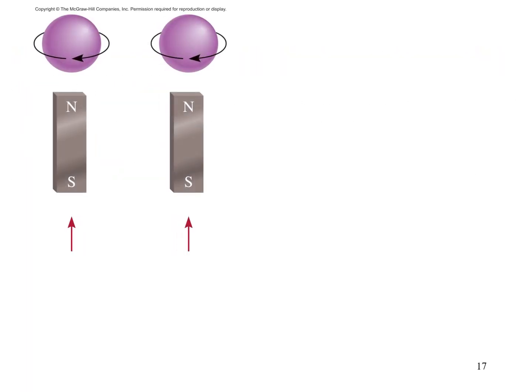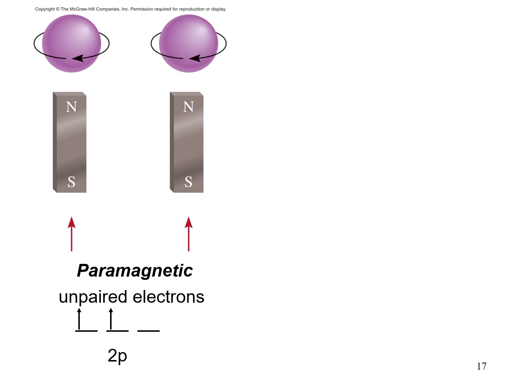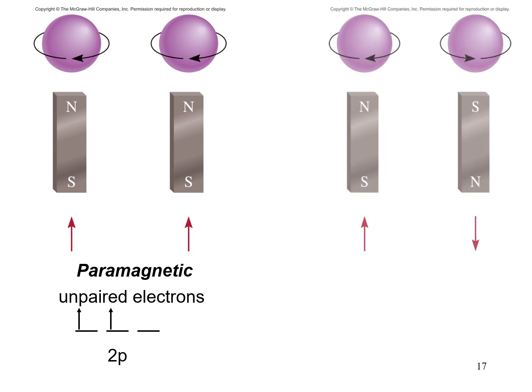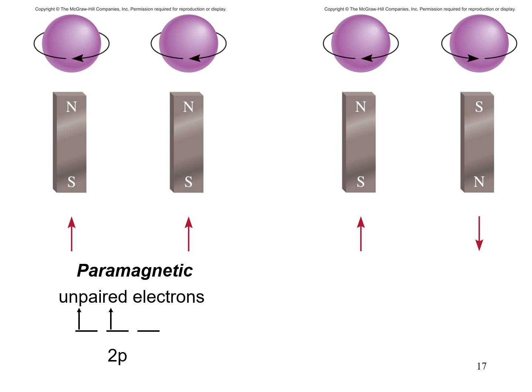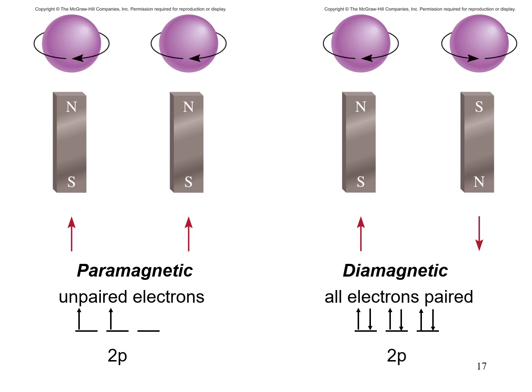Next are paramagnetic and diamagnetic properties. Paramagnetic refers to an atom that has unpaired electrons — such atoms are attracted toward a magnet. Diamagnetic refers to an atom in which all electrons are paired — these atoms are not attracted by a magnet, so there is no force of attraction on them.